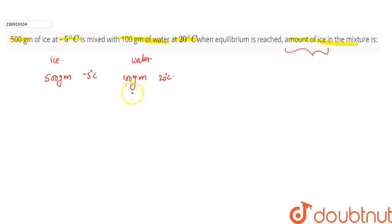So, first of all, I have to see if this ice is to reach zero degrees, then how much energy is required? If this 500 grams of ice at minus 5 degrees Celsius has to go to zero degrees ice, then how much total energy is required?